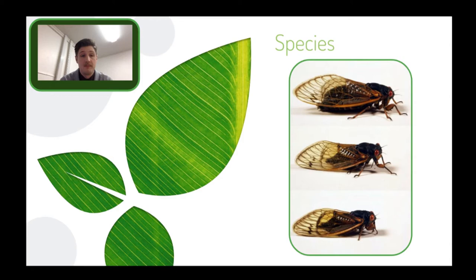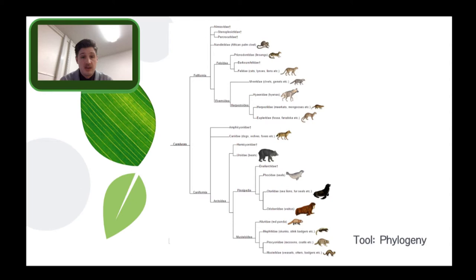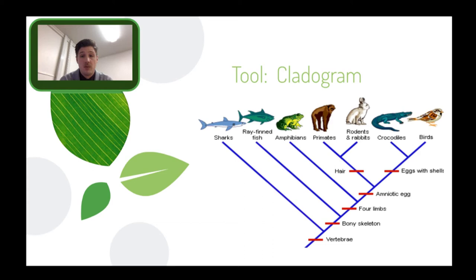A few tools we use: the phylogeny is a sort of family tree that classifies organisms by their evolutionary history using our taxa. We also have the cladogram, which shows the older traits that all organisms have in common — such as a vertebra — and goes up to newer traits that split off and make organisms more unique.